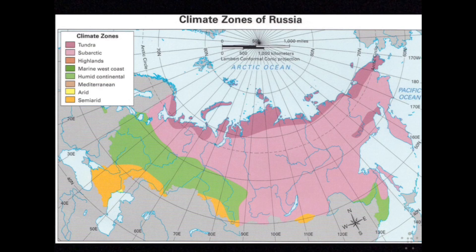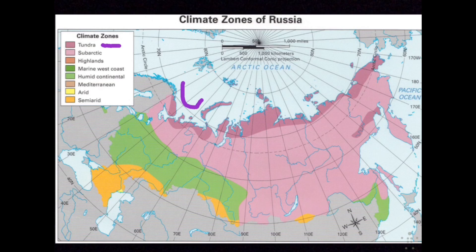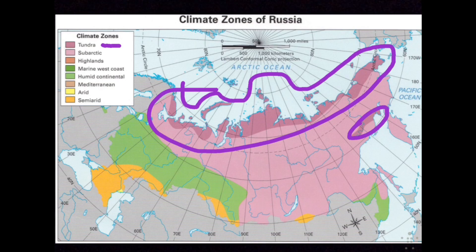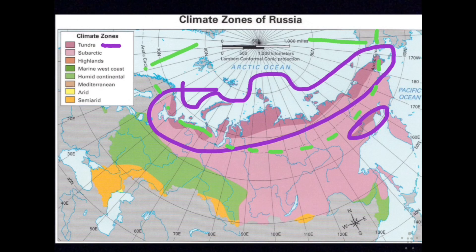Letter B: high latitude climate zones — extremely cold winters and short summers. One of the vegetations you're going to see here is the tundra, located in the far north. Almost all north of the Arctic Circle, shown as a dotted line, is tundra. The tundra covers 10% of Russia, all above that 66 and a half degree north line, which is the Arctic Circle.